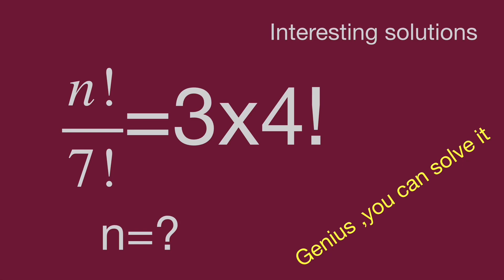While n factorial over 7 factorial equals 3 times 4 factorial, find the value of n. In this video we will share an interesting approach to find the solutions.